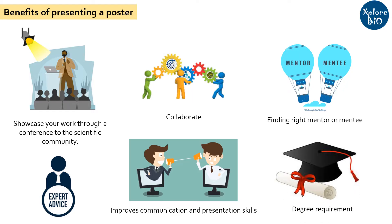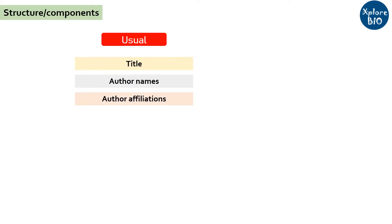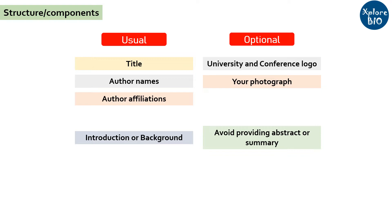Now let's see what is the structure or general format of a research poster. Usually a poster has a short, relevant title of your work, followed by the authors who performed the research and their affiliations. You can optionally add the conference and university logo and your photograph, although it is not mandatory. Start with the background or introduction to make the audience aware of your topic. An abstract or summary is usually not advised to be included, as the poster itself summarizes the work. Mention the methods followed in brief.